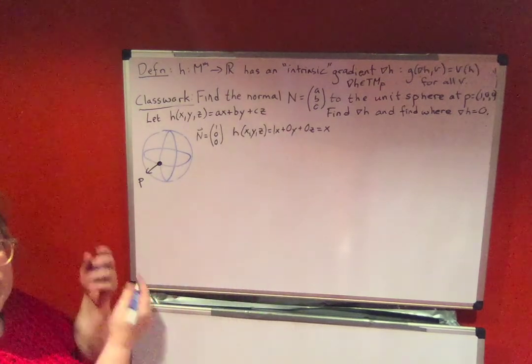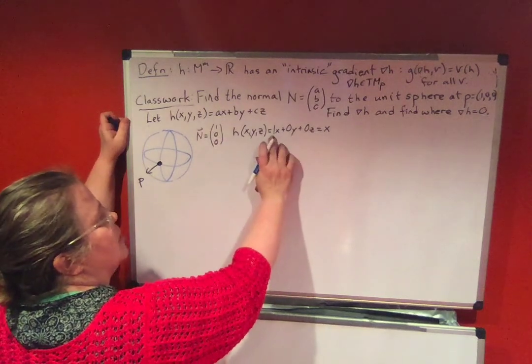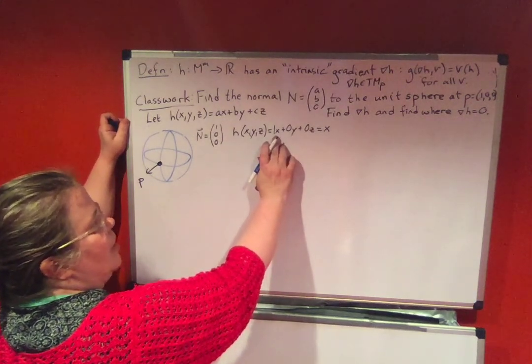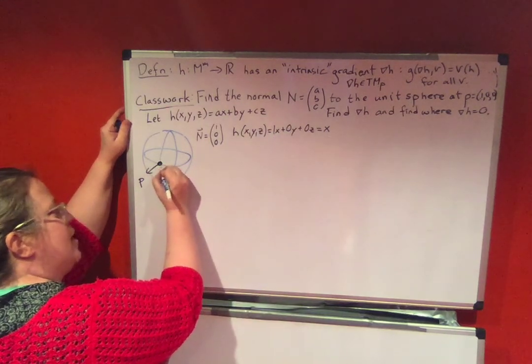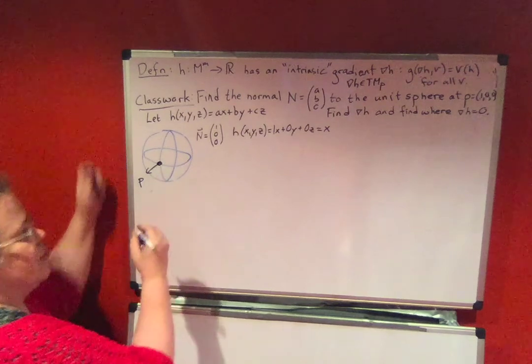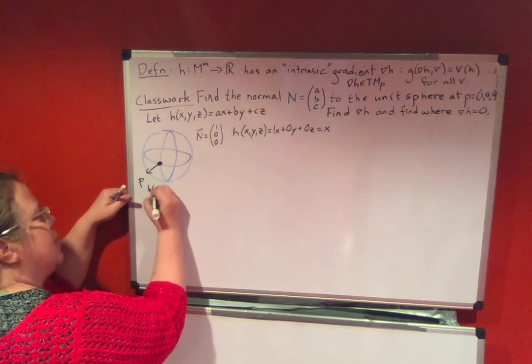I just want to draw the level set so you can see it a little better. h of (x,y,z) is going to equal 1 times 1 at P. So h equals 1 right here. h of P equals 1. Let me just write that here. h of P equals 1.